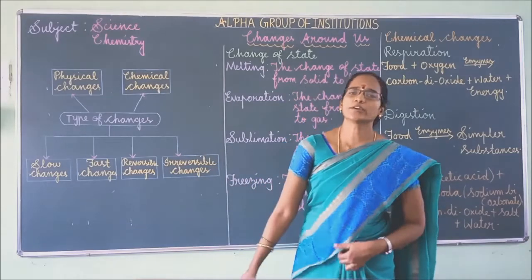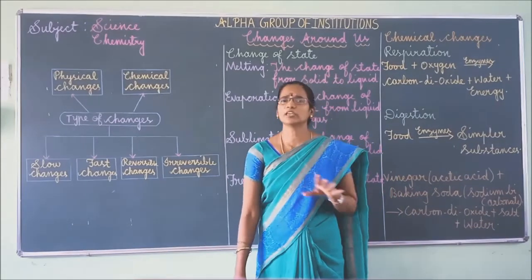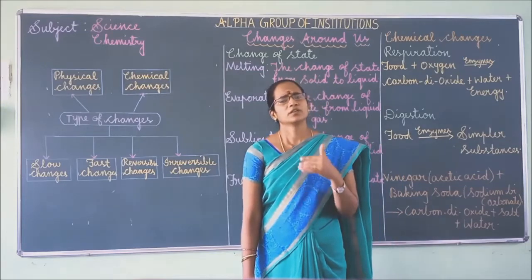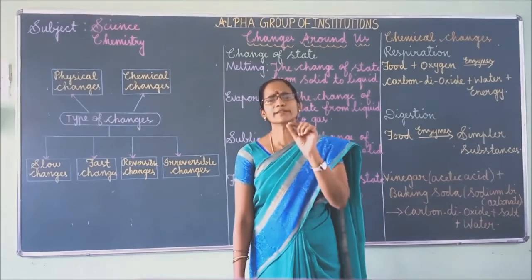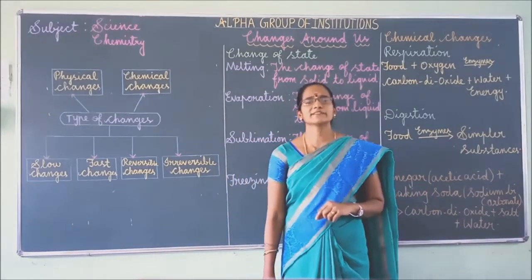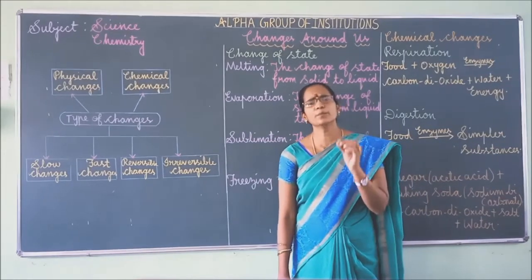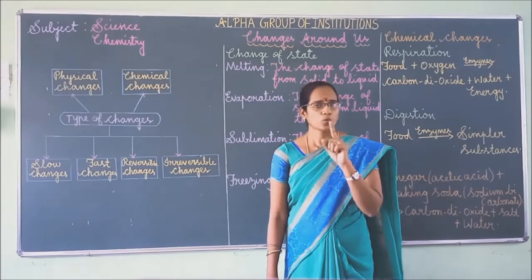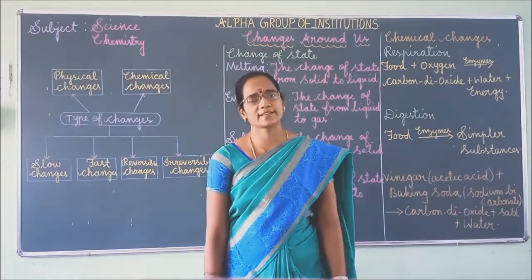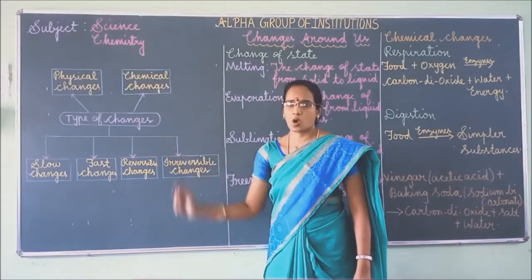Next, digestion of food is also a chemical change. Our digestive system breaks down complex substances into simple substances. For example, carbohydrates break down into simple sugars such as sucrose, whereas proteins decompose to form amino acids. Hence, digestion of food is a chemical change.